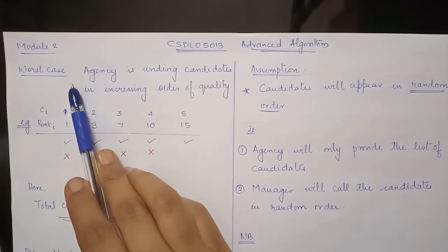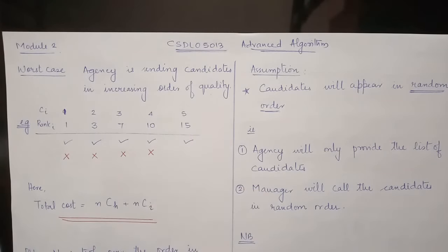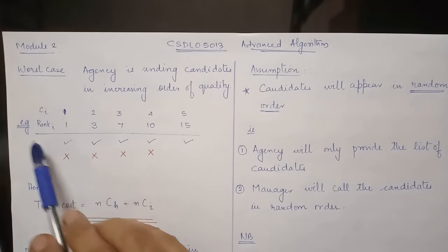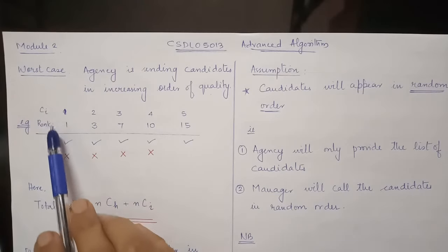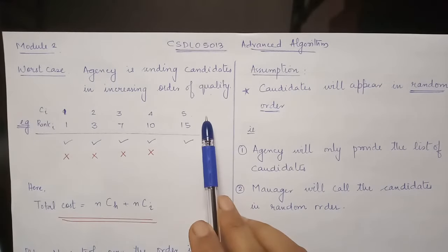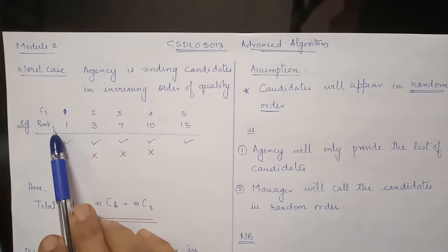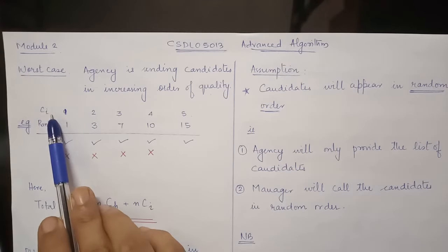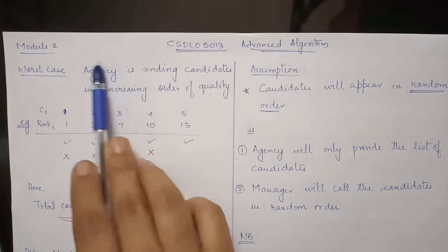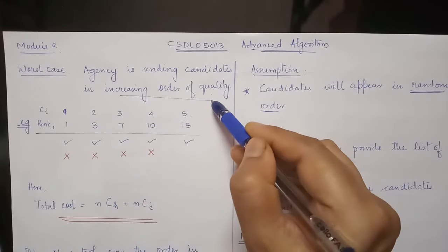Now let's discuss the worst case that can happen: the agency sends candidates in increasing order of quality. Let's illustrate this worst case with an example. Here we have five candidates. ci represents the candidate, and rank i represents the quality of each candidate. In the worst case, the agency sends candidates in increasing order of quality.